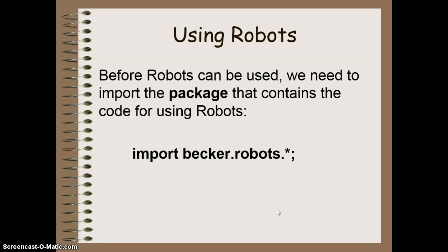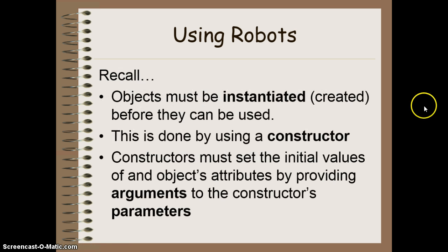So how do we code this in an actual program? Before you can do it, you have to import a package. A package is a set of codes, commands, and classes that another programmer has created that we can import into our programs and use. This package is called becker.robots, and this line of code has to be written at the very top of your program. If you want to make an object, you have to first instantiate or create that object before it can be used. You do this by running a constructor — a very specialized service for an object that sets the initial values of an object's attributes. You do this by providing arguments to the parameters of the constructor.